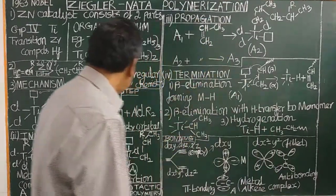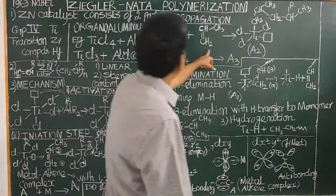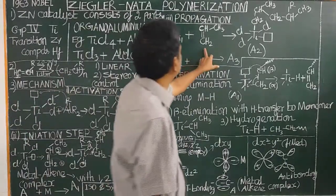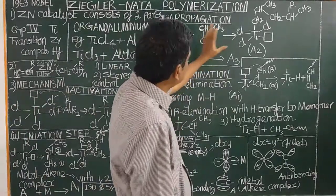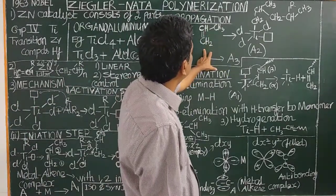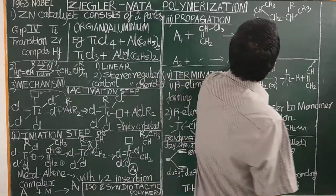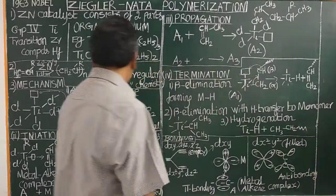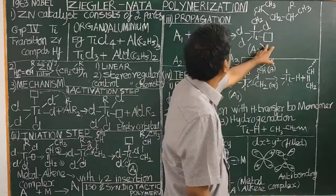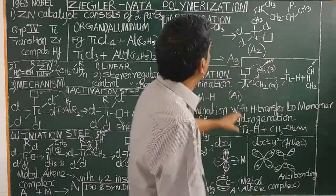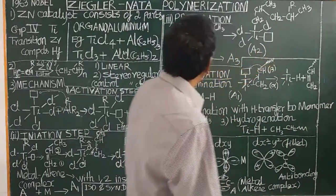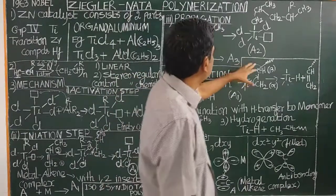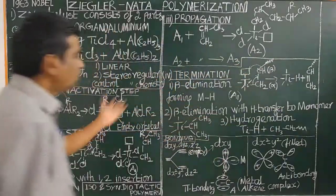In the propagation step, the complex A1 reacts with another monomer to form A2, and A2 further combines with another monomer to form A3, and so on, building up the polymer chain.